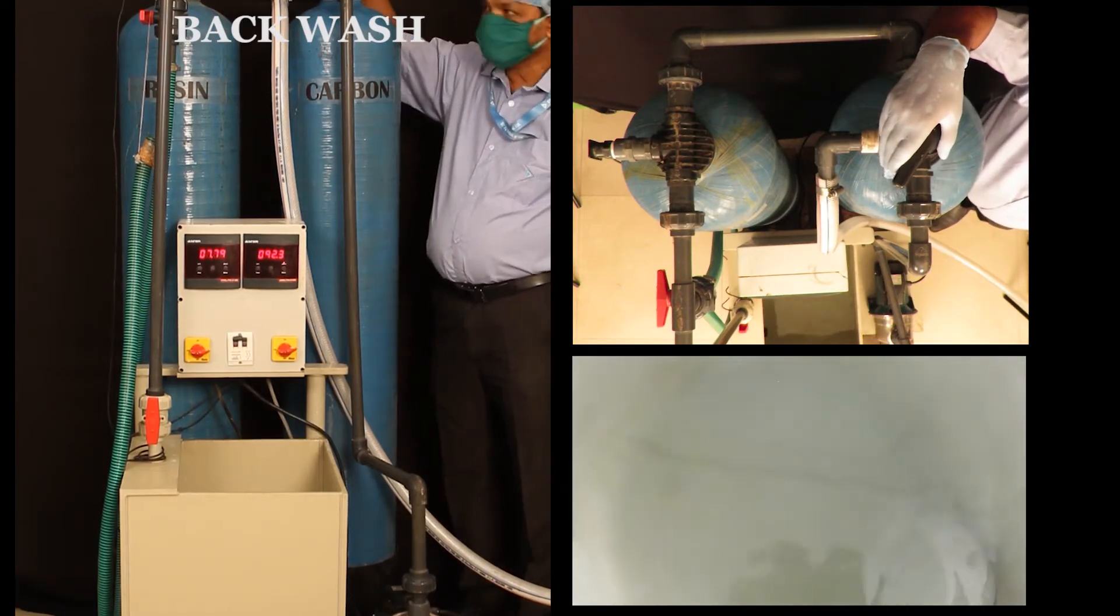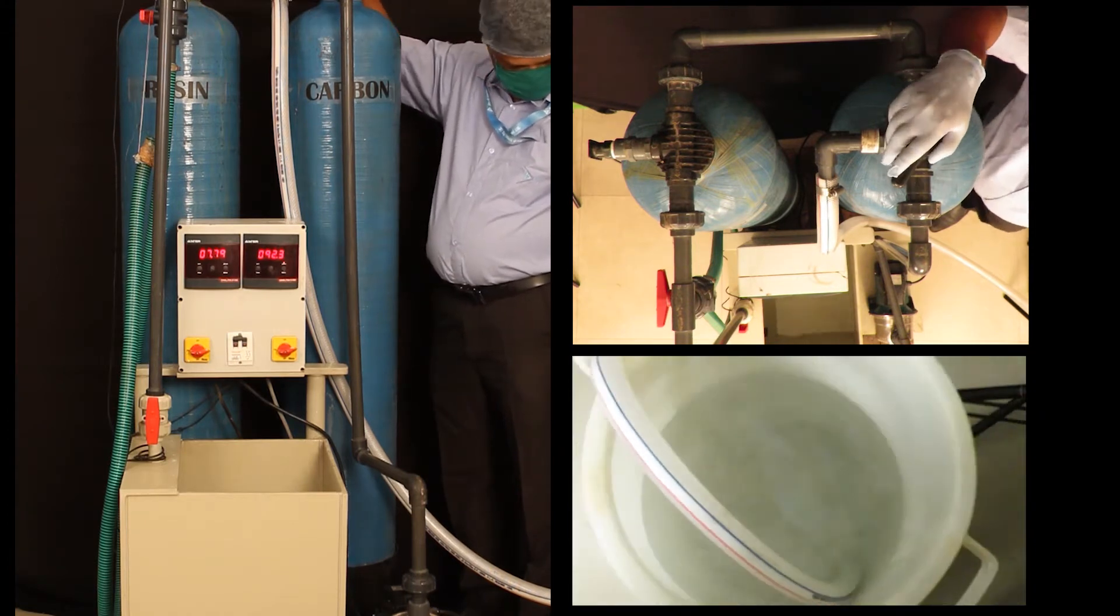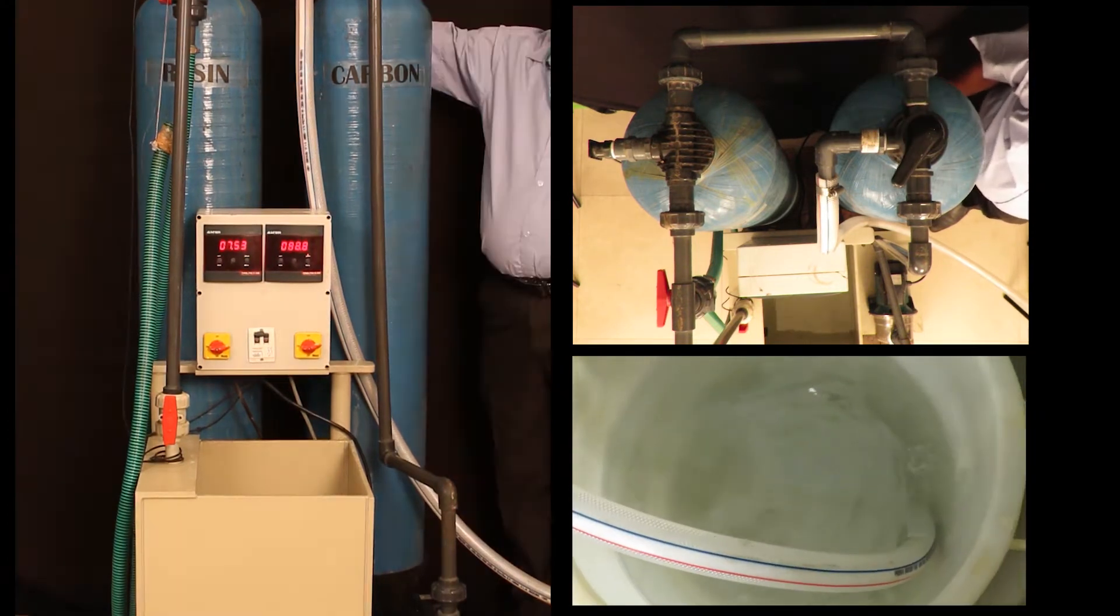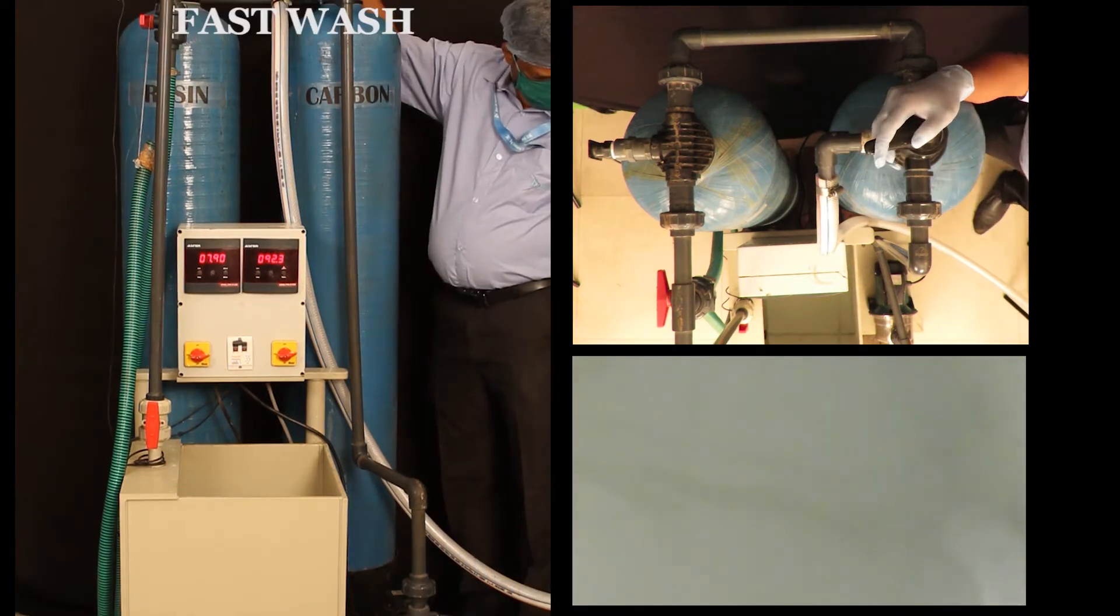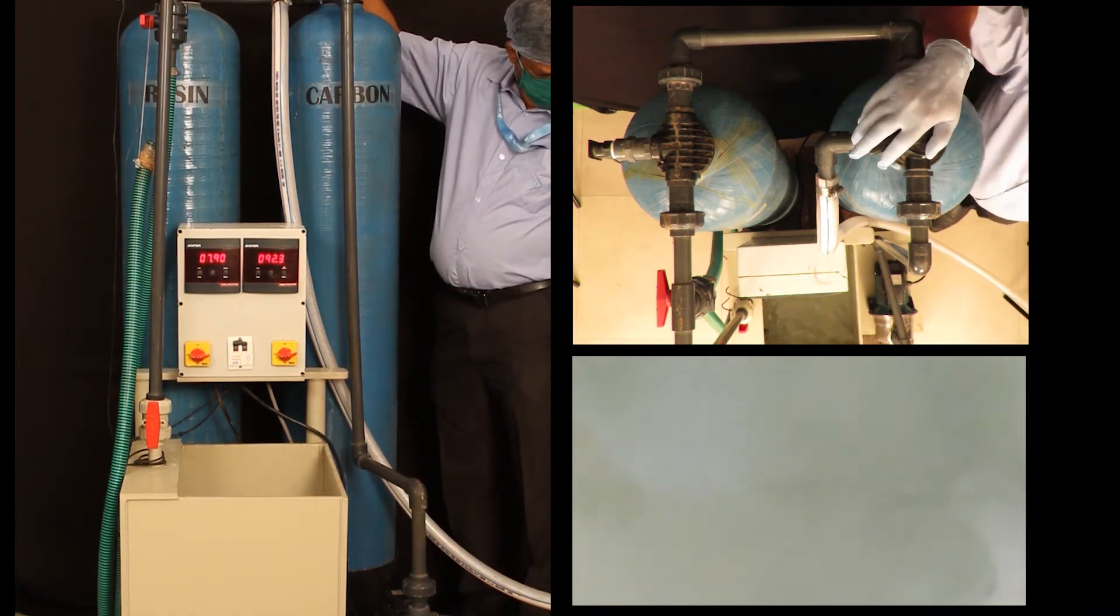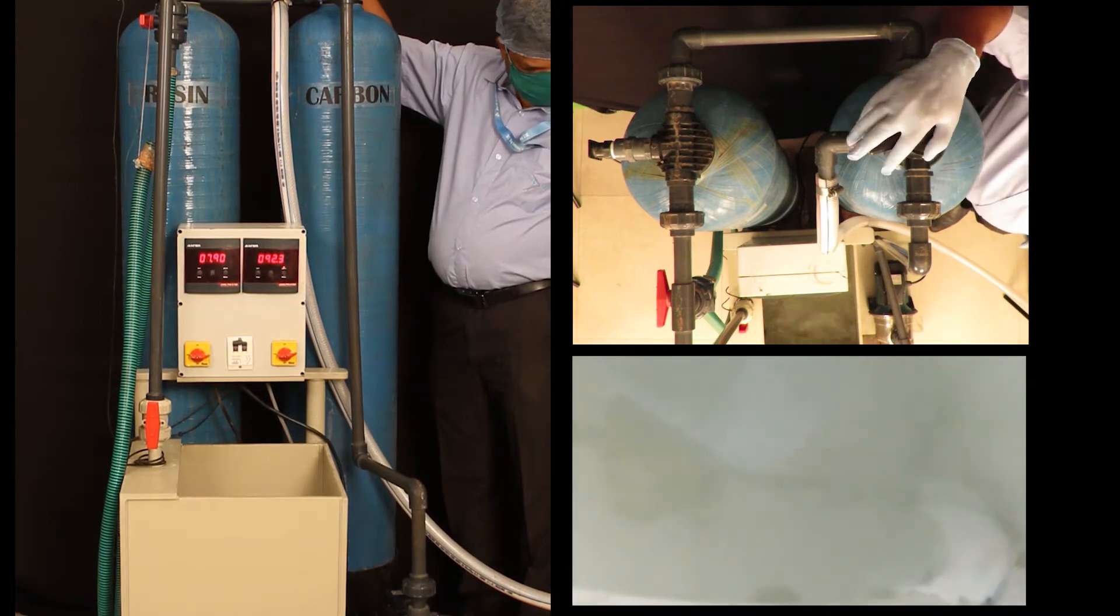Then do a fast wash for 30 seconds to 1 minute. As you can see here, water coming out from the pipe is quite oily and dusty. Repeat the process 3 to 5 times and do normal rinsing once this process is done.